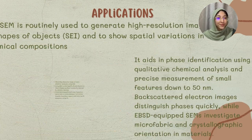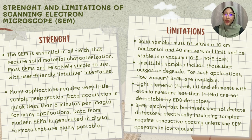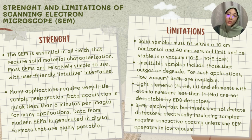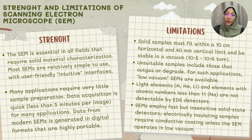Backscattered electron images distinguish phases quickly, while EBSD-equipped SEMs investigate microfabric and crystallographic orientation in materials. For the strengths of SEM: SEM is essential in all fields that require solid material characterization. Most SEMs are relatively simple to use with user-friendly, intuitive interfaces. Many applications require very little sample preparation, and data acquisition is quick — less than five minutes per image for many applications.